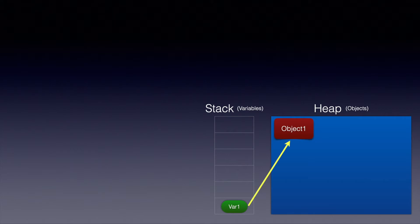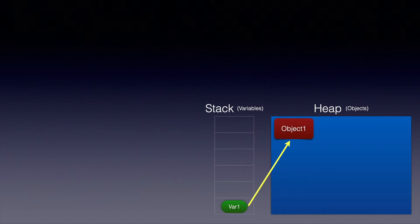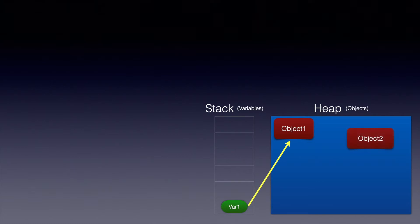So if we have to access object one, we need variable one — we cannot access the object directly on the heap. Think of it as a pointer, where the variable knows how to figure out where the object is stored.